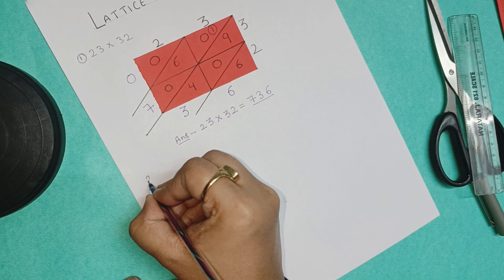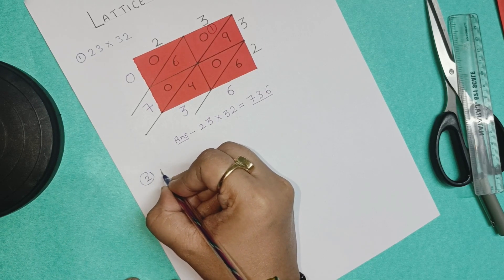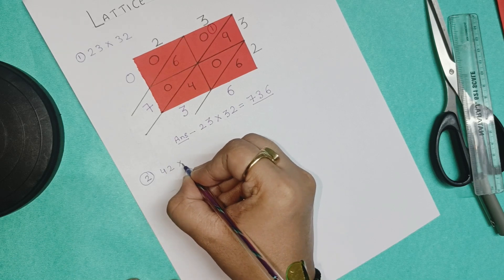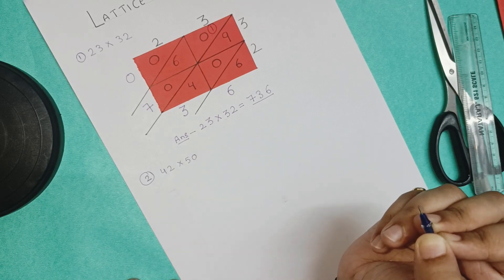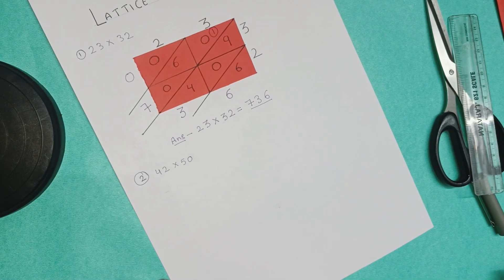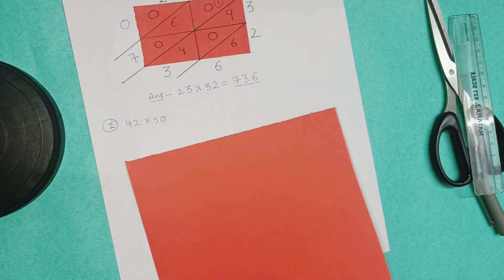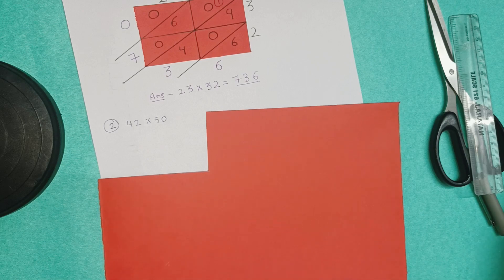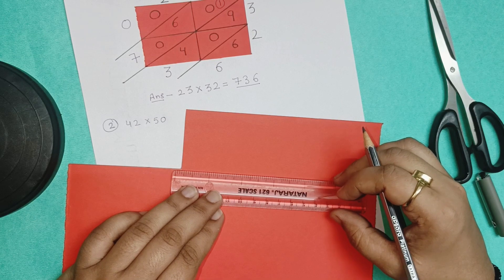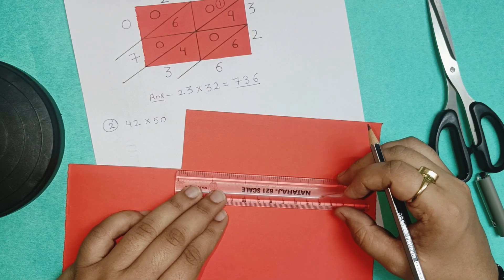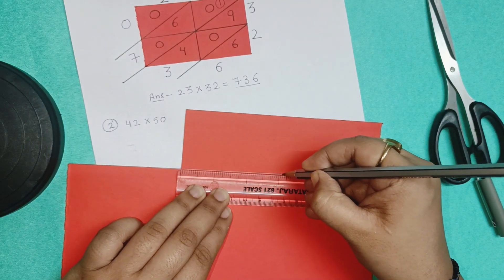For second example, let us take 42 into 50. Okay. We are going to follow the same approach and we are going to cut the rectangle. In a very similar manner, we have to use the ruler and pencil to draw the rectangle first, and then use the scissors to cut it down.